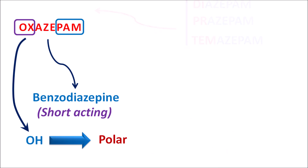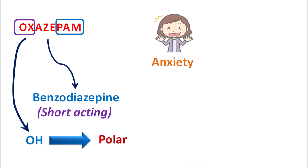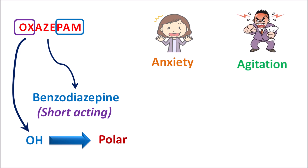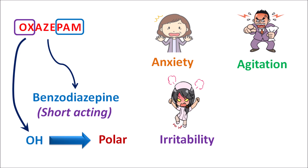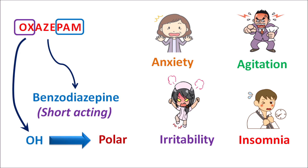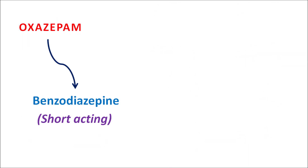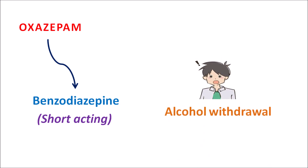Just like other benzodiazepines, Oxegepom is used for the management of anxiety and associated symptoms. Oxegepom can reduce anxiety, reduce agitation in patients, reduce irritability, and even induce sleep — that's why it can be used in the treatment of insomnia. Apart from these, this drug can also be used in the management of symptoms associated with alcohol withdrawal, such as anxiety, tension, irritability and craving for alcohol.